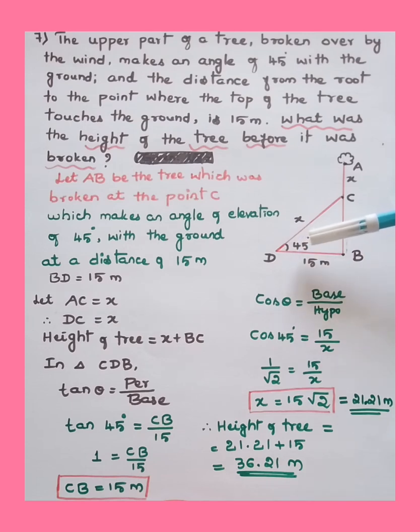And makes an angle of 45 degrees with the ground. So as the tree breaks here and touches the ground, it makes an angle of 45 degrees. So at point D, the angle is equal to 45 degrees with the ground.